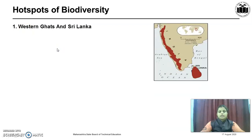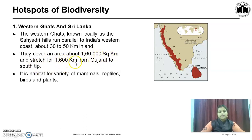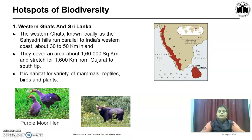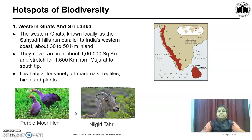First, Western Ghats and Sri Lanka. The Western Ghats, known locally as the Sahyadri hills, run parallel to India's western coast about 30 to 50 km inland. They cover an area of about 160,000 square km and stretch for 1,600 km from Gujarat to the south tip. It is habitat for a variety of mammals, reptiles, birds and plants, such as the purple moorhen, Indian bison, and the Nilgiri thar.